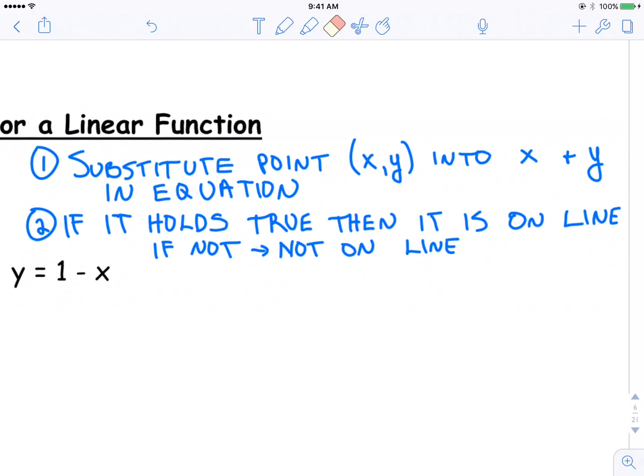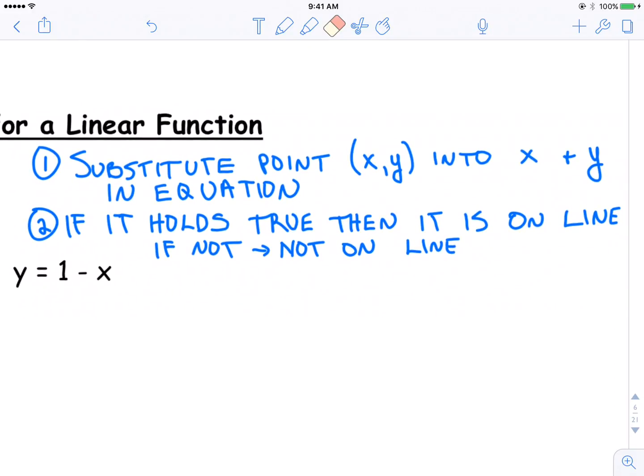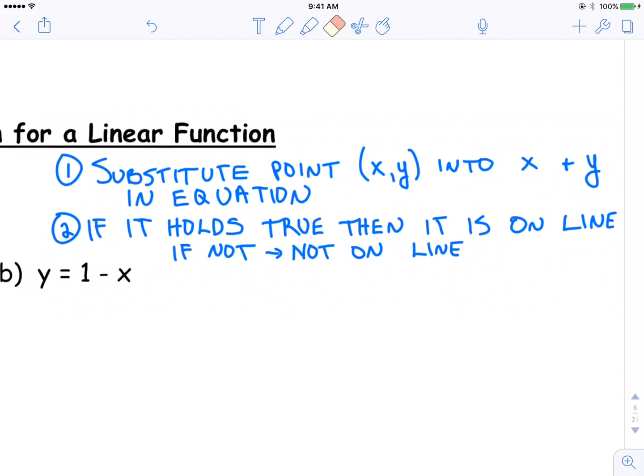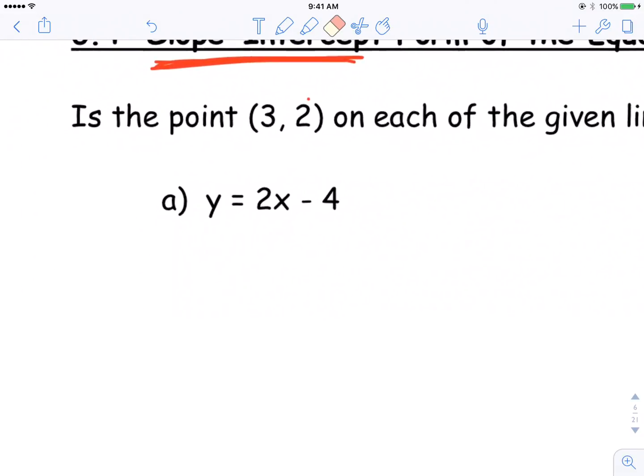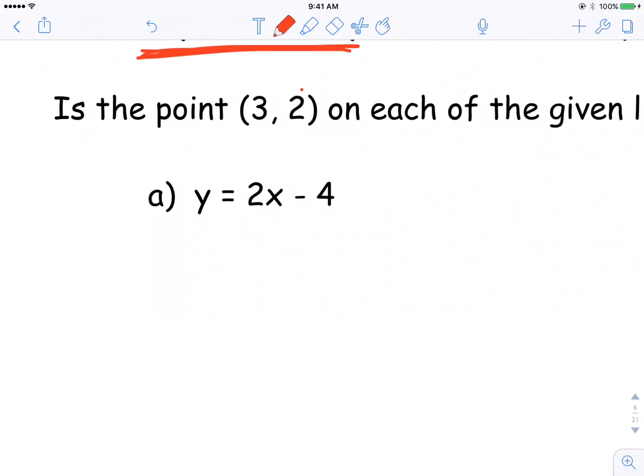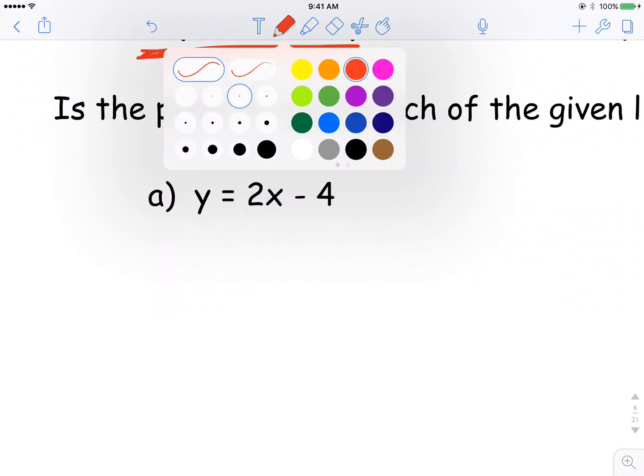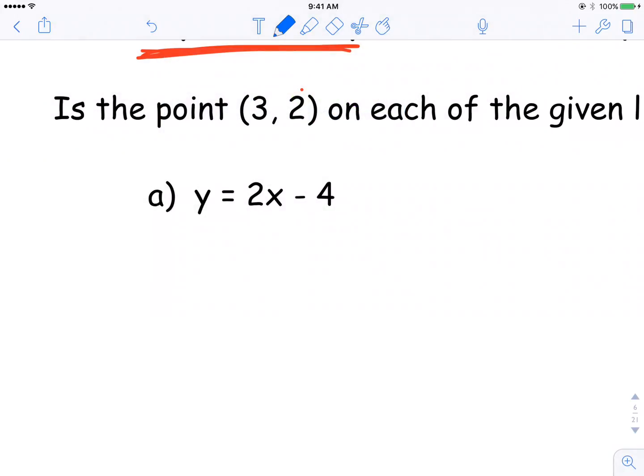Substitute the point x, y into x and y in the equation. Step 2, if it holds true, then it's on the line. If not, then it's not on the line. So let's see how that works. So we have the equation y is equal to 2x minus 4, and we're trying to see if this point (3, 2) is on this line. This is an x-coordinate, this is a y-coordinate. So we're going to substitute both the x and the y into their respective positions in the equation.